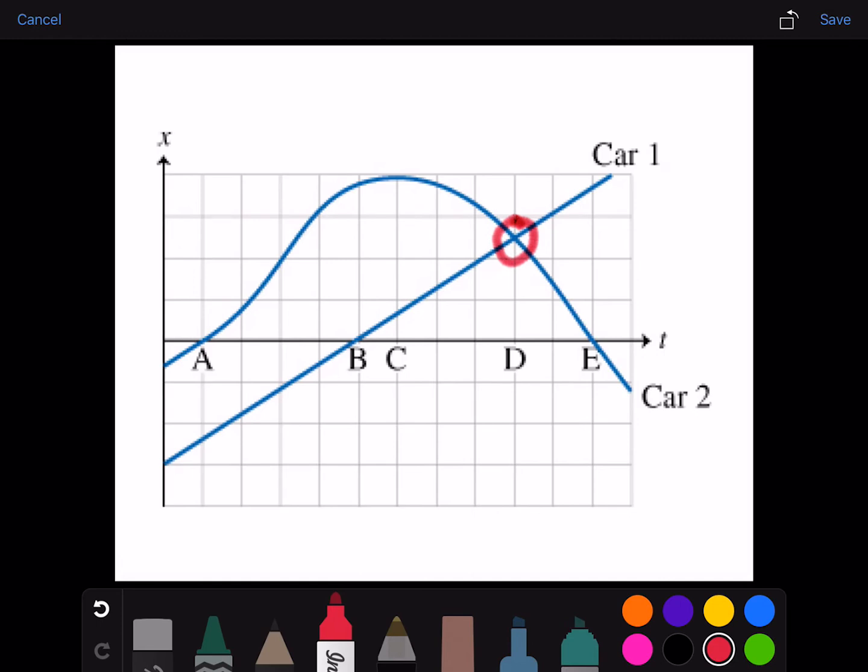Car 1 is moving up in the positive direction, and car 2 is moving towards the negative direction. You can also look at the slope of their graphs. So the slope of car 1 is positive, and the slope of car 2 is negative.